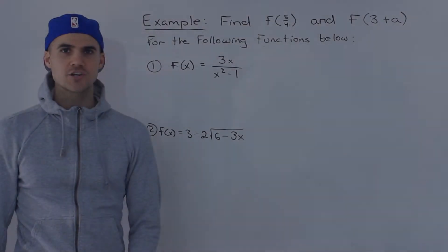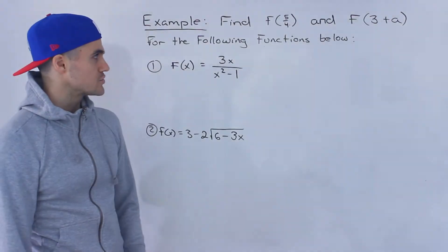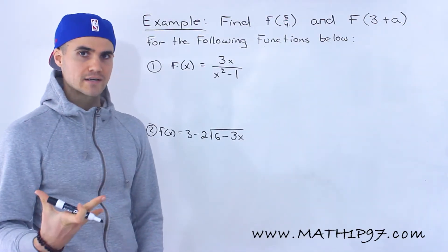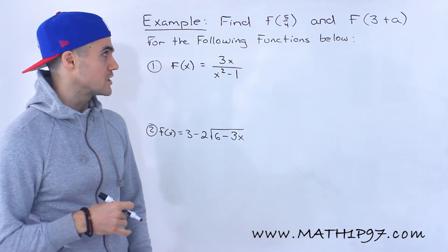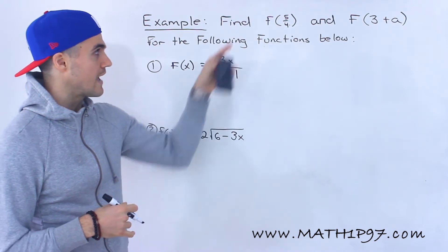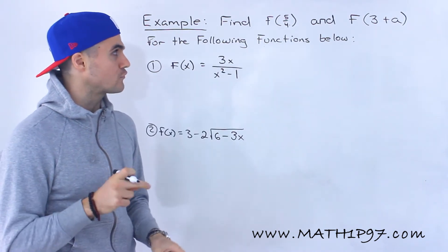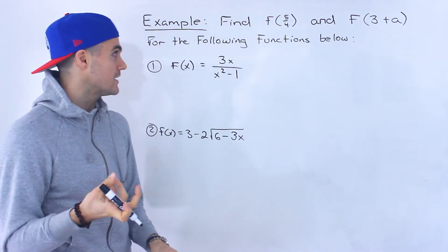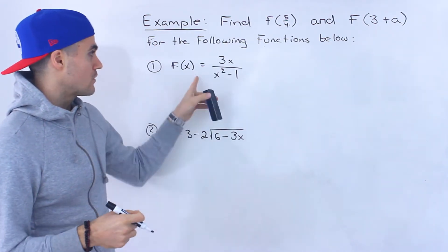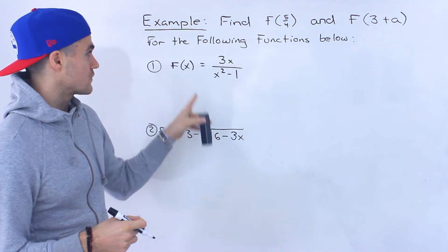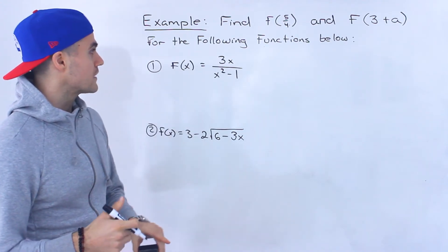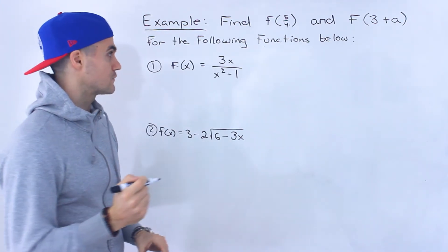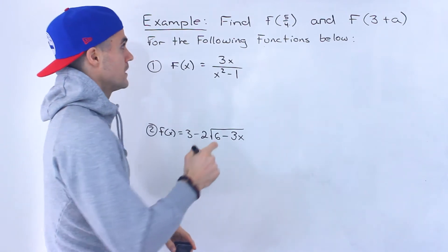What's up everyone? Welcome back. Patrick here, and moving on to another example — a little bit more practice with function notation. We've got to find f of 5 over 4 and f of 3 plus a for these two functions. The first function is f of x equals 3x over x squared minus 1.